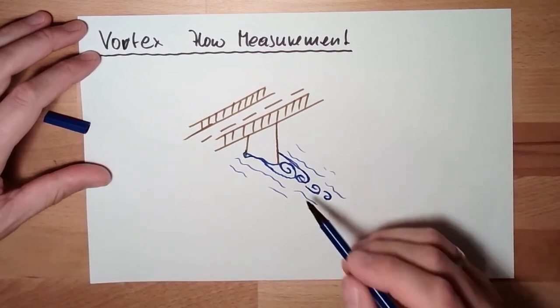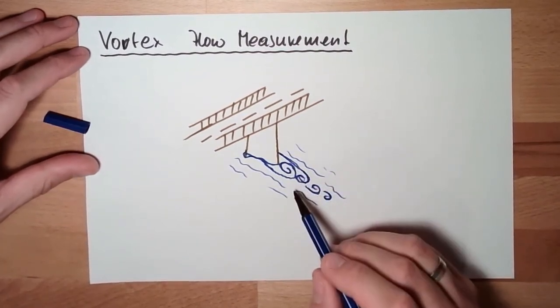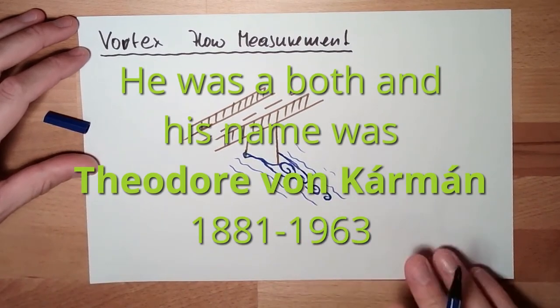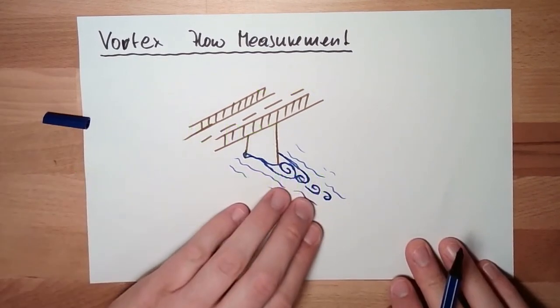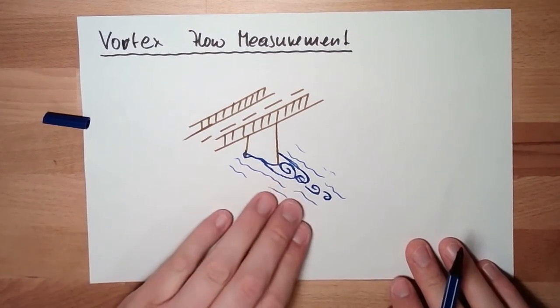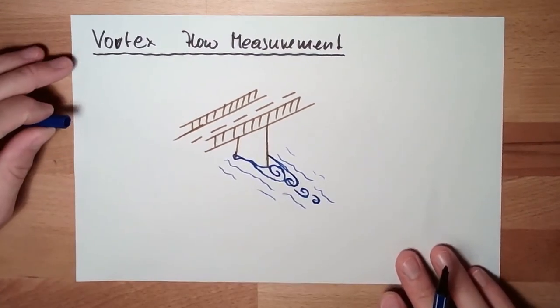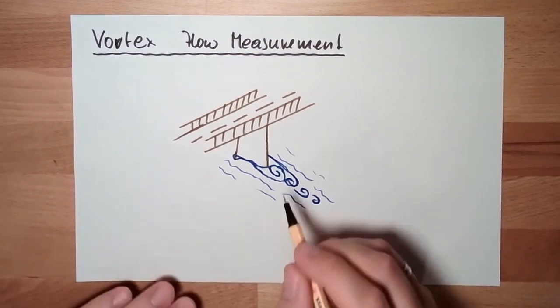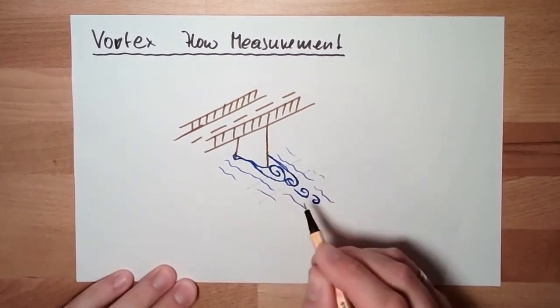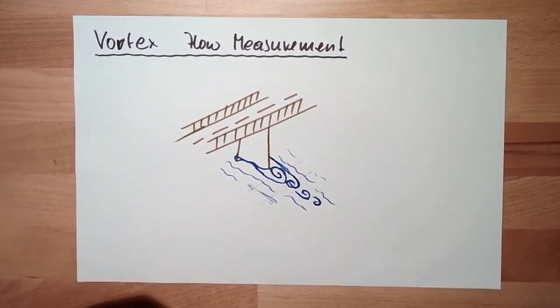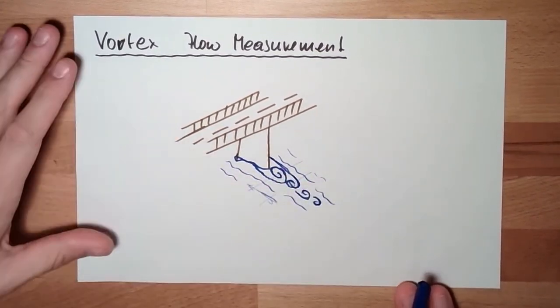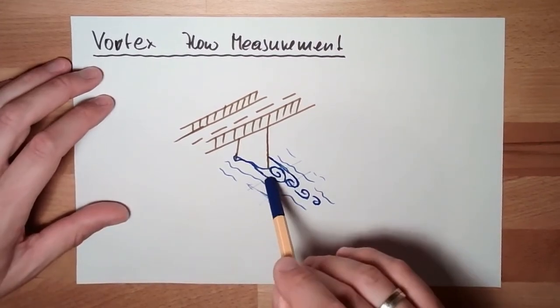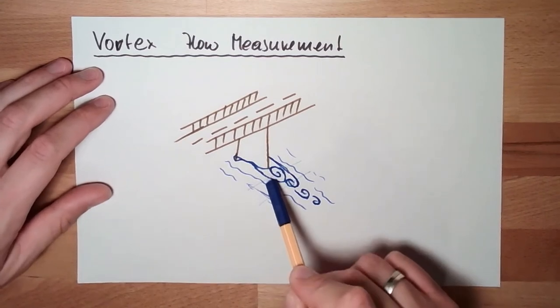Actually it was a Hungarian physicist, or was he a mathematician, I am not sure. Of course, he developed a way to describe this mathematically. And if something is described, then you can use it. He found out that the distance of these vortex things depends on the stream velocity. And exactly this is the principle of the vortex flow measurement.